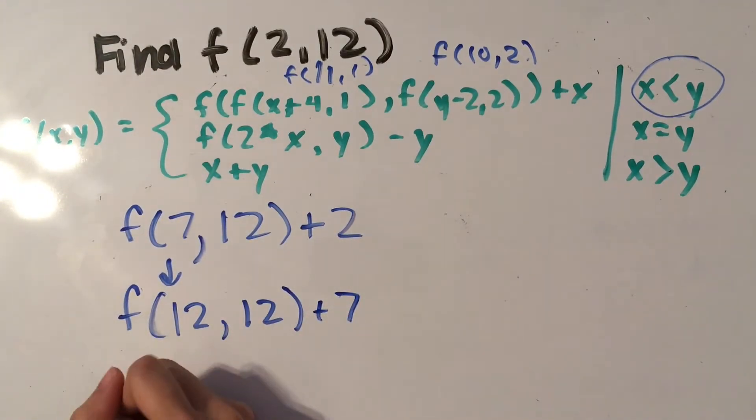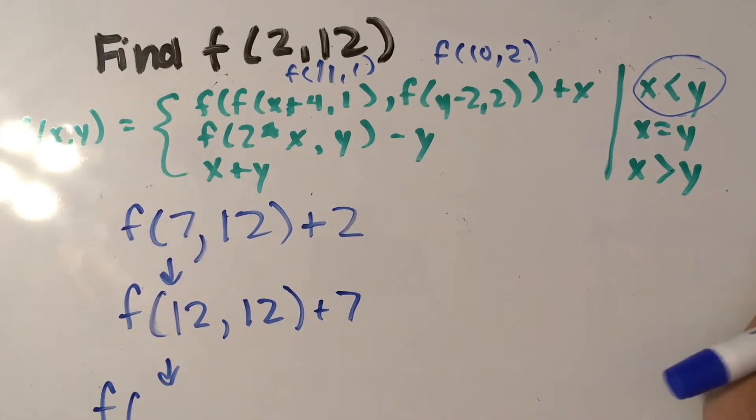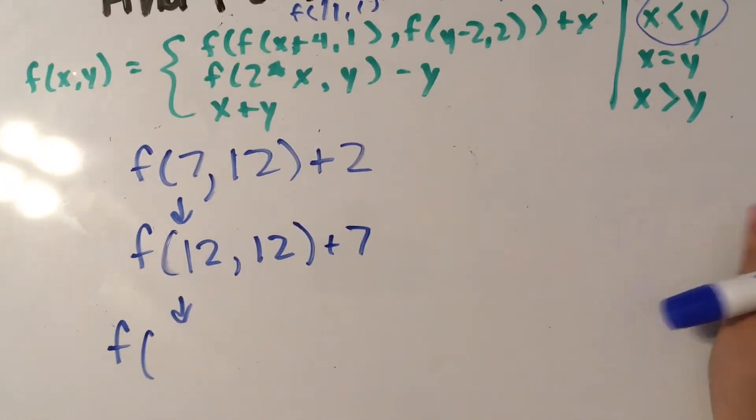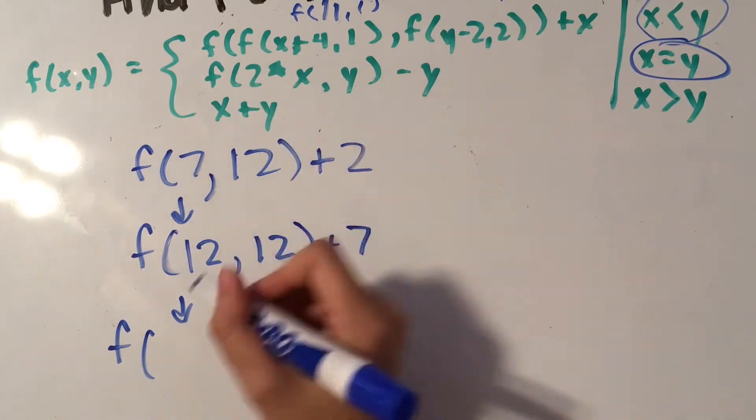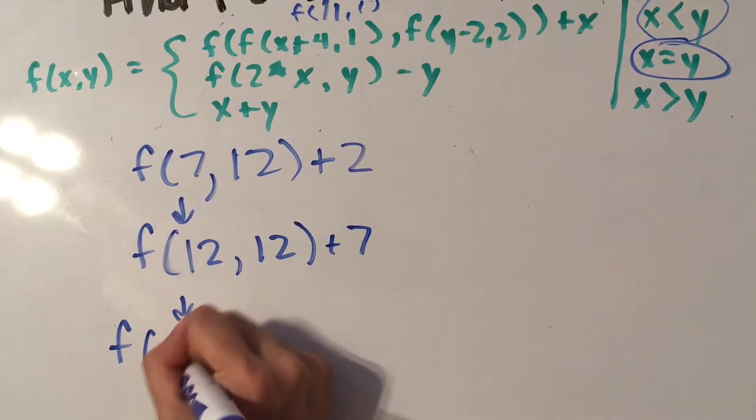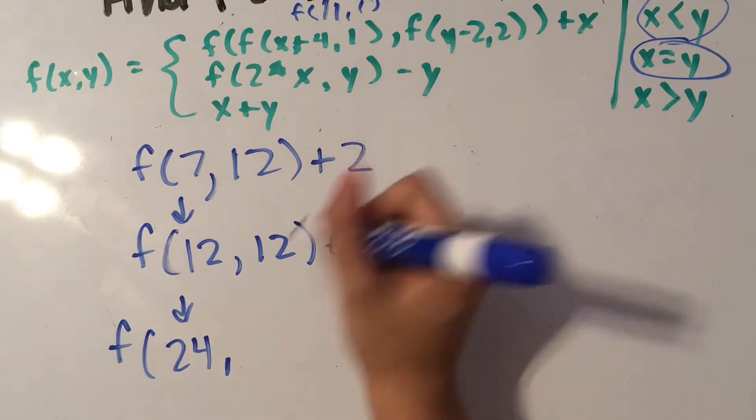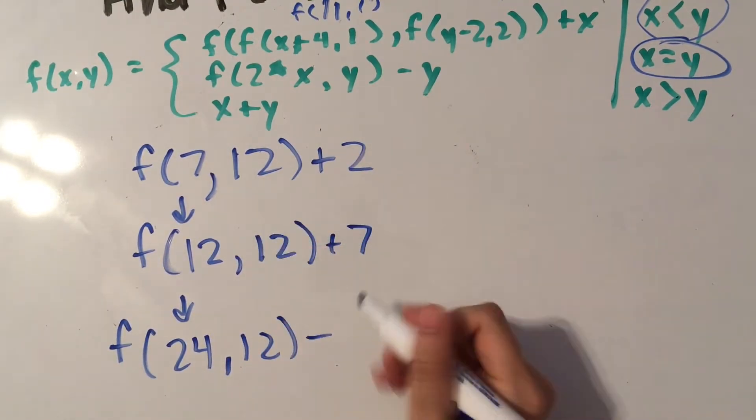And then we're going to call another function again, except we see that x is equal to y this time. So we have f of 2 times x, so 2 times 12 is 24 comma y which is 12 minus y which is 12.